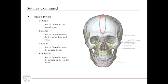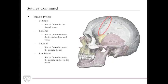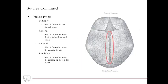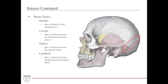The most important sutures to know: the metopic suture — fusion between the frontal bones; the coronal suture — fusion between the frontal and parietal bones, where you can imagine a crown sitting; the sagittal suture — fusion between the parietal bones; and the lambdoid suture — fusion of the parietal and occipital bones.